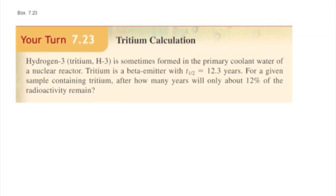All right, so let's practice that to predict how much radioactivity would remain or how much time. In this case, tritium is sometimes formed in the primary coolant water of a nuclear reactor, and it's a beta emitter with a half-life of 12.3 years. So for a given sample containing tritium,